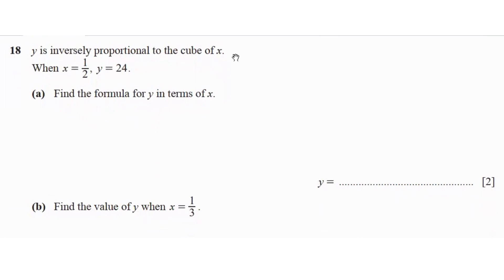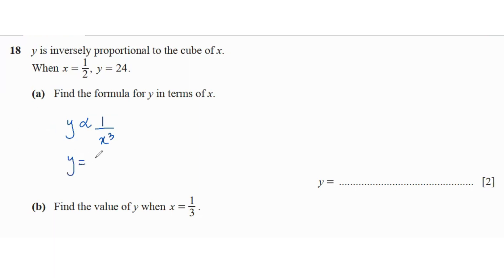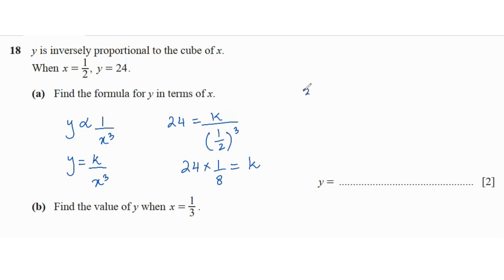Y is inversely proportional to the cube of x. When x is 1/2, y is 24. Find the formula for y in terms of x. Since y is inversely proportional to x cubed, y equals k over x cubed. Substituting: 24 equals k over (1/2) cubed, which is k over 1/8. So k equals 24 times 1/8, which is 3. Therefore y equals 3 over x cubed.